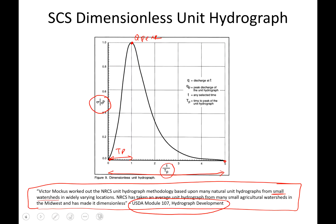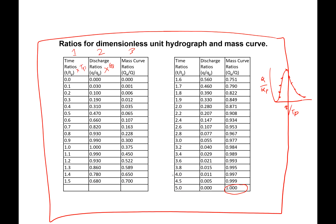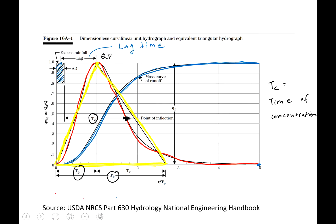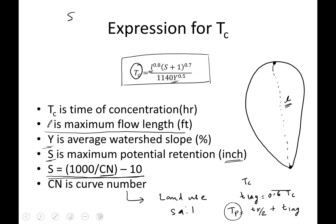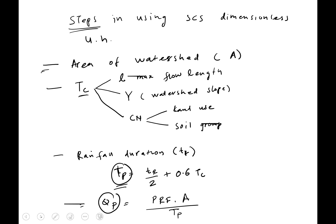Once you know Qp and tp, you go back and rescale the dimensionless unit hydrograph by multiplying the first column (t/tp) by tp and the second column (Q/Qp) by Qp, giving you the unit hydrograph for your watershed. In the next video we will do a small assignment applying this method. Thank you very much.